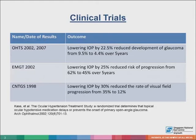Results from several landmark studies, including the Ocular Hypertension Treatment Study, the Early Manifest Glaucoma Trial, and the Collaborative Normal Tension Glaucoma Study, show that a lower IOP reduces the risk of developing glaucoma and slows the risk of disease progression.